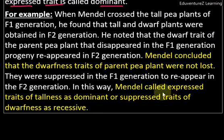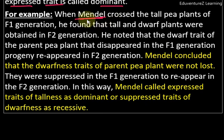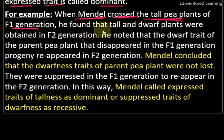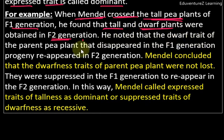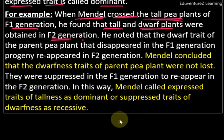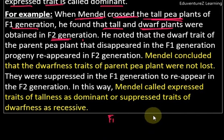For example, when Mendel — Dr. Gregor Johann Mendel, the father of heredity — crossed the tall pea plants of the F1 generation, he found that tall and dwarf plants were obtained in the F2 generation. In F1 generation, when he took plants and crossed them, he obtained plants with genotype Capital T Small T — that is, tall plants with one dominant and one recessive allele.